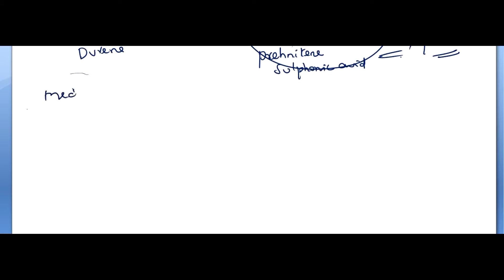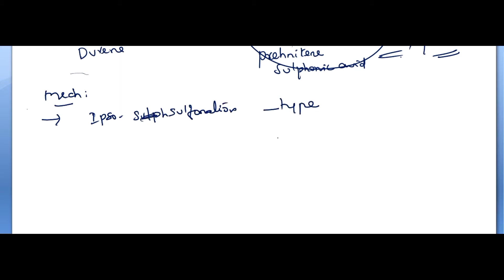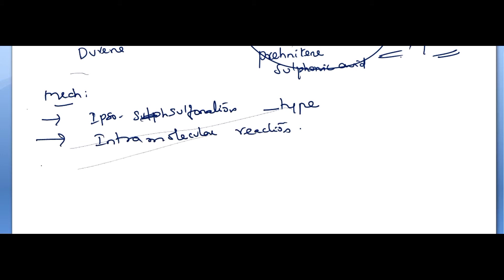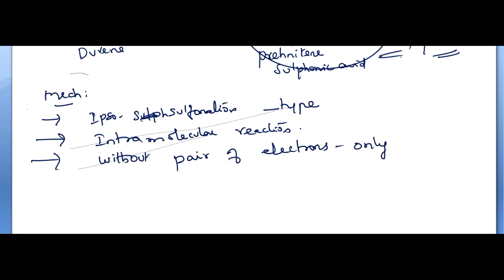What is the mechanism? Ipso sulfonation. It is an ipso sulfonation type, an intramolecular reaction. Without a lone pair of electrons. The para position is the only alkyl group — only migration of the alkyl group occurs.